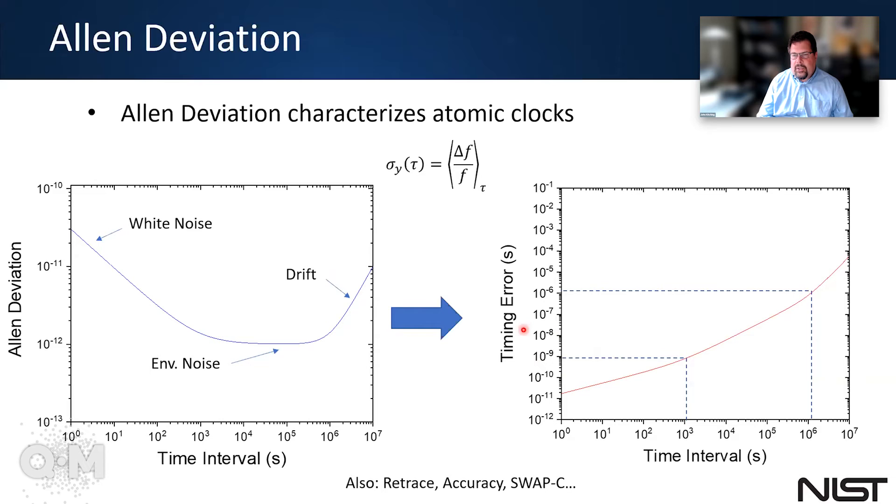And you can basically translate this kind of Allen deviation into a timing error, which is what is needed for a lot of applications. If you're trying to time something precisely, then you need to know essentially the timing error. And there's a little bit more that goes into this, things like accuracy and things. But nevertheless, you can just see that from this Allen deviation, you can calculate a timing error and you can see that the timing error is increasing in time.